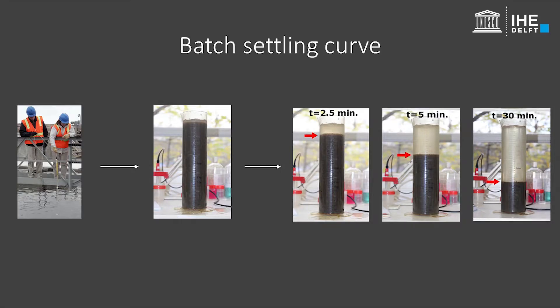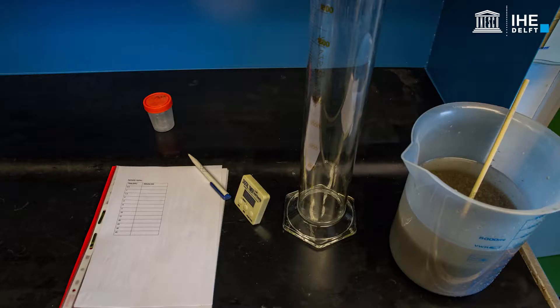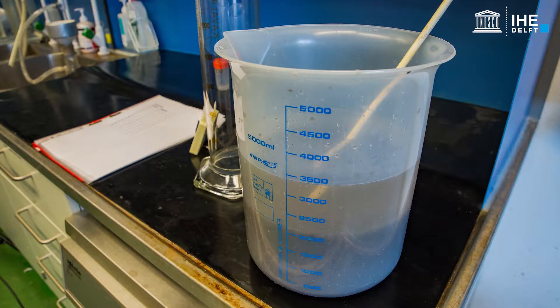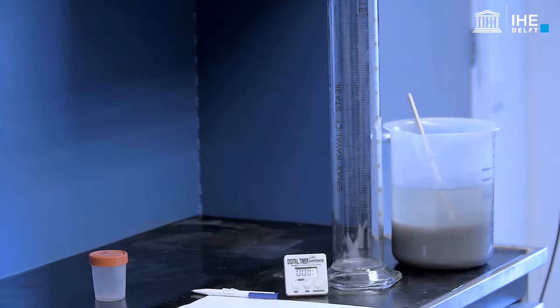A batch settling curve is measured by tracking the height of the sludge blanket during settling in a graduated cylinder. The activated sludge sample is collected from the aeration tank.